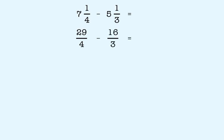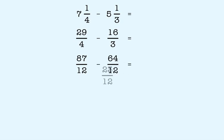Now we must rewrite the fractions with a common denominator. 29 fourths becomes 87 twelfths, and 16 thirds becomes 64 twelfths. Now just subtract: 87 twelfths minus 64 twelfths is equal to 23 twelfths.